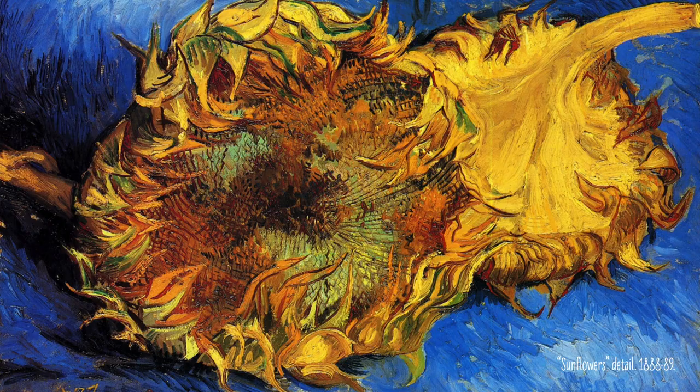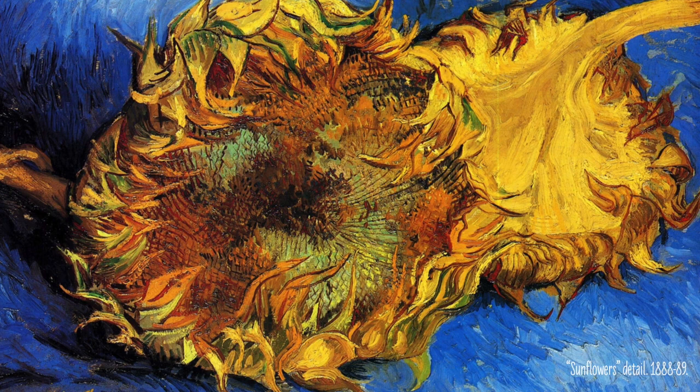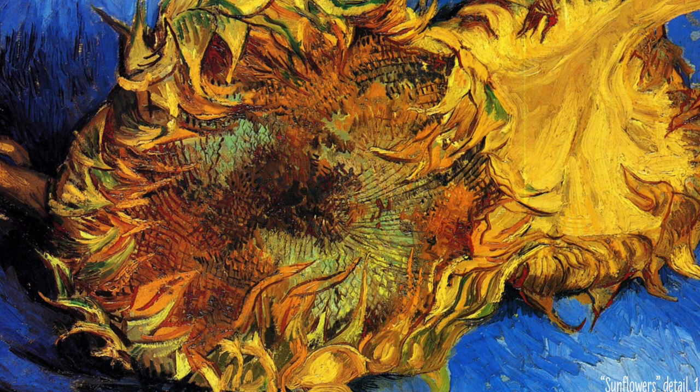Van Gogh used implied texture. Even though the texture on the sunflower is not real when you touch it, you can imagine what the texture feels like by the way he used his brush strokes and color.